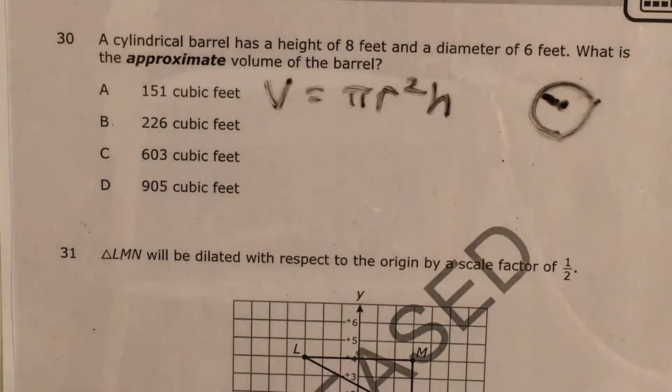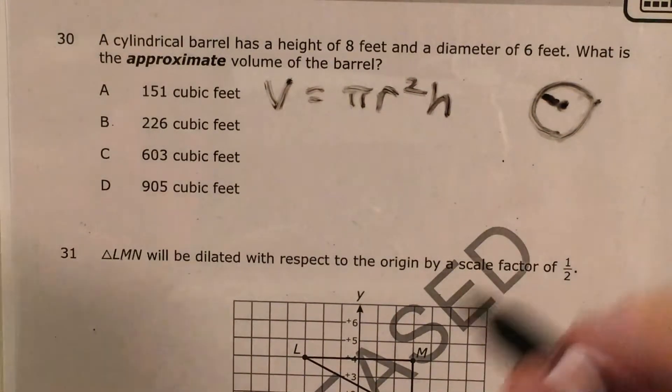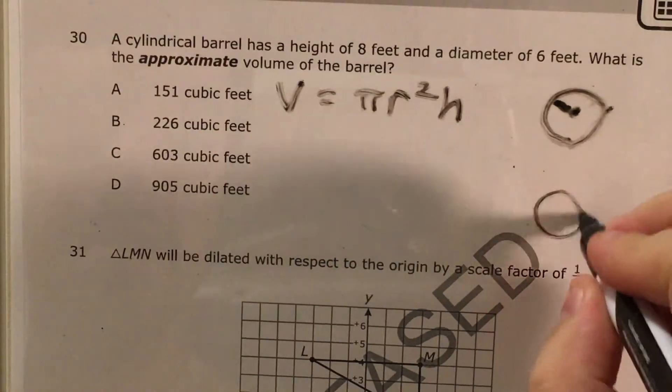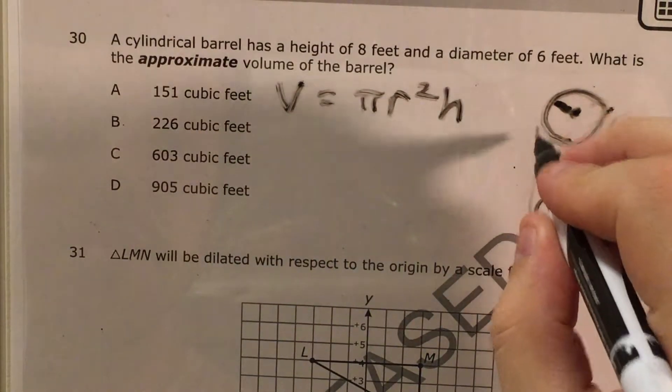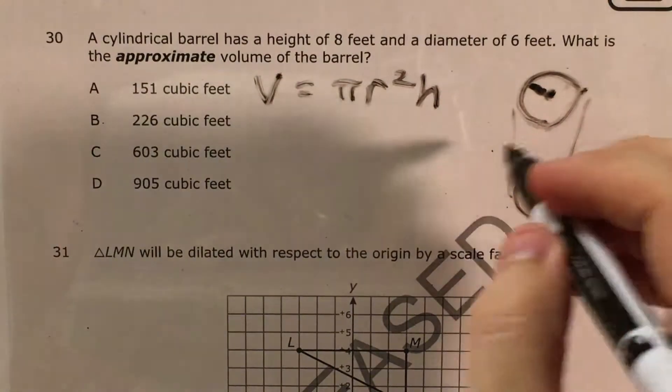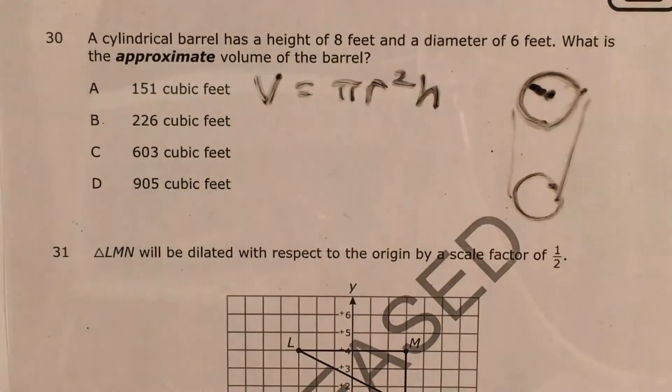But then if we bring a cylinder into it, a cylinder is like two circles with some lines in the middle, and these lines represent the height, so I need my radius and my height.